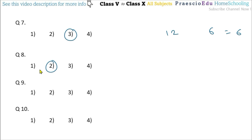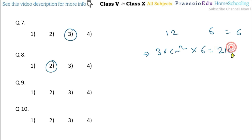Question number 9: The area of one face of a cubical box is 36 cm². What is the total area of all its faces? A cubical box is a cube, so all surfaces have the same dimensions and equal area. One surface is 36 cm² and there are 6 surfaces, so 36 multiplied by 6 = 216 cm². Option number 3 is the correct one.